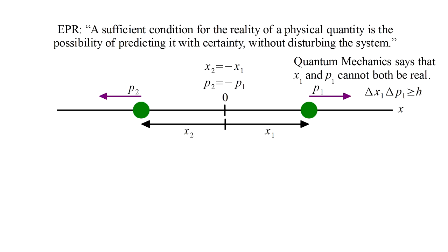Now quantum mechanics says that the position and momentum of particle one cannot both be real, according to the EPR definition, because of the uncertainty principle. If we shrink one uncertainty to zero, either delta x1 or delta p1, then the other uncertainty has to grow to infinity so that their product is never less than Planck's constant. According to quantum mechanics, if the position of a particle is real, then its momentum cannot be, and vice versa.